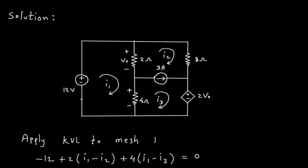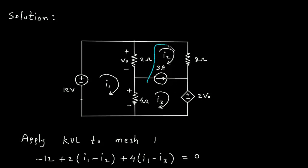Now we will apply KVL to this super mesh. As we can see, mesh number 2 and mesh number 3 — between these two meshes there is a current source, so this forms a super mesh.